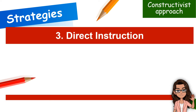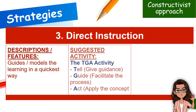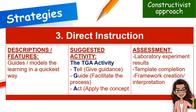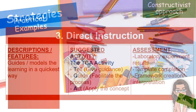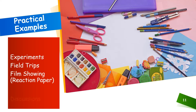The third strategy under the constructivism approach is direct instruction. Direct instruction guides or models the learning in the quickest way because teachers provide the learning. Students model teachers' words and actions. One technique to use this strategy is through the TGA activity: Tell, give guidance; Guide, facilitate the process; and Act, apply the concept. Assessment tools can be laboratory experiment results, template completion, and framework creation or interpretation. Practical examples of the constructivism approach are experiments, field trips, film showing or reaction papers, and discussions.